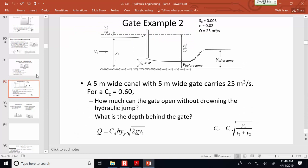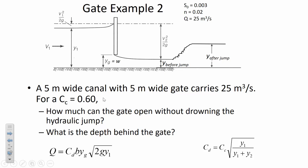For the second gate example, the question is how much you can open the gate without drowning the hydraulic jump. Step one: find Y after the jump using Manning's equation given n, channel slope, and flow rate q for a rectangular channel. Step two: find the critical depth Y_c = (q²/g)^(1/3) and compare Y_c to Y_n. If Y after the jump is greater than the critical depth, then a hydraulic jump can be supported.